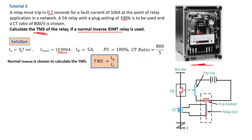We know that TMS is equal to ta divided by tc — TMS is the quotient of the actual time over the tripping time. We have ta = 0.7 seconds, but we do not yet have tc. To find tc, we use the normal inverse formula: tc = 3 / log(m). That is the formula for tc — the tripping time of the relay — for the normal inverse characteristics.